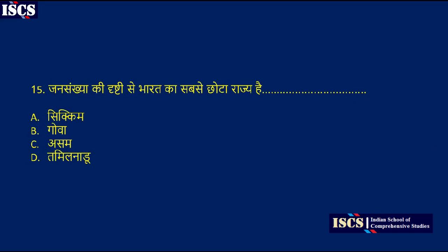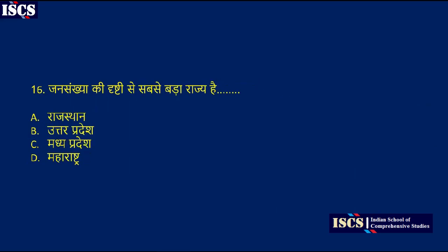Now look at question number 15: which is the smallest state of India by population? Options are Rajasthan, Uttar Pradesh, Madhya Pradesh, or Maharashtra. The right answer is option B, Uttar Pradesh.